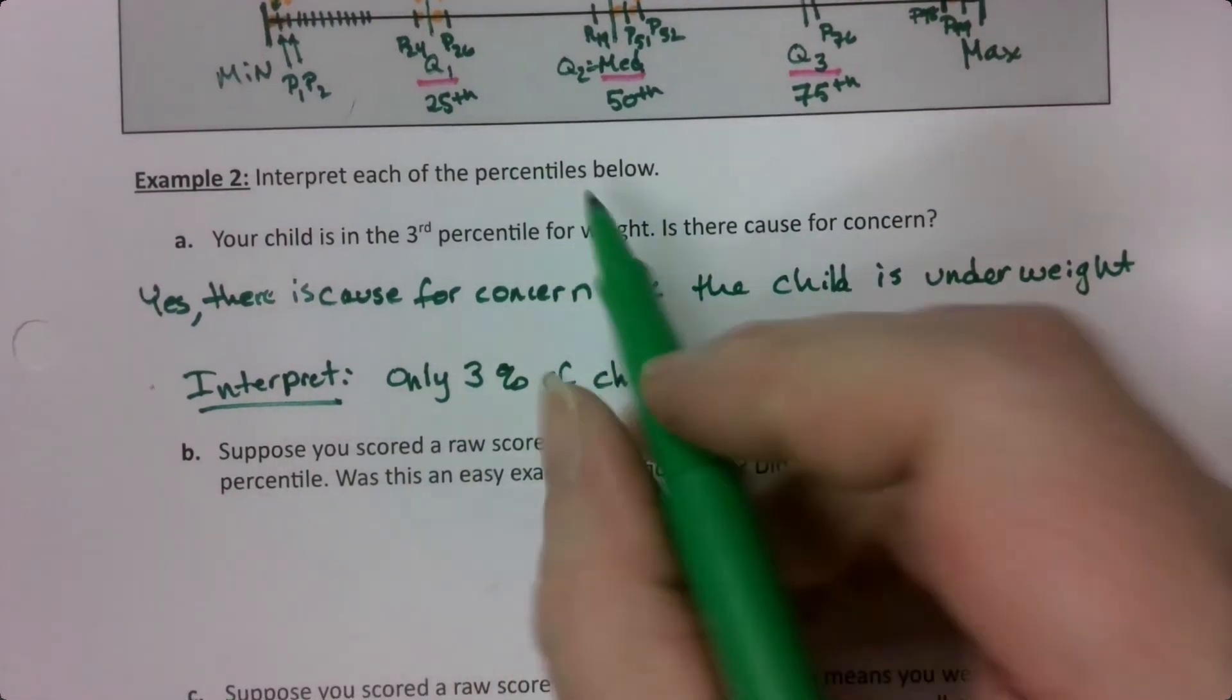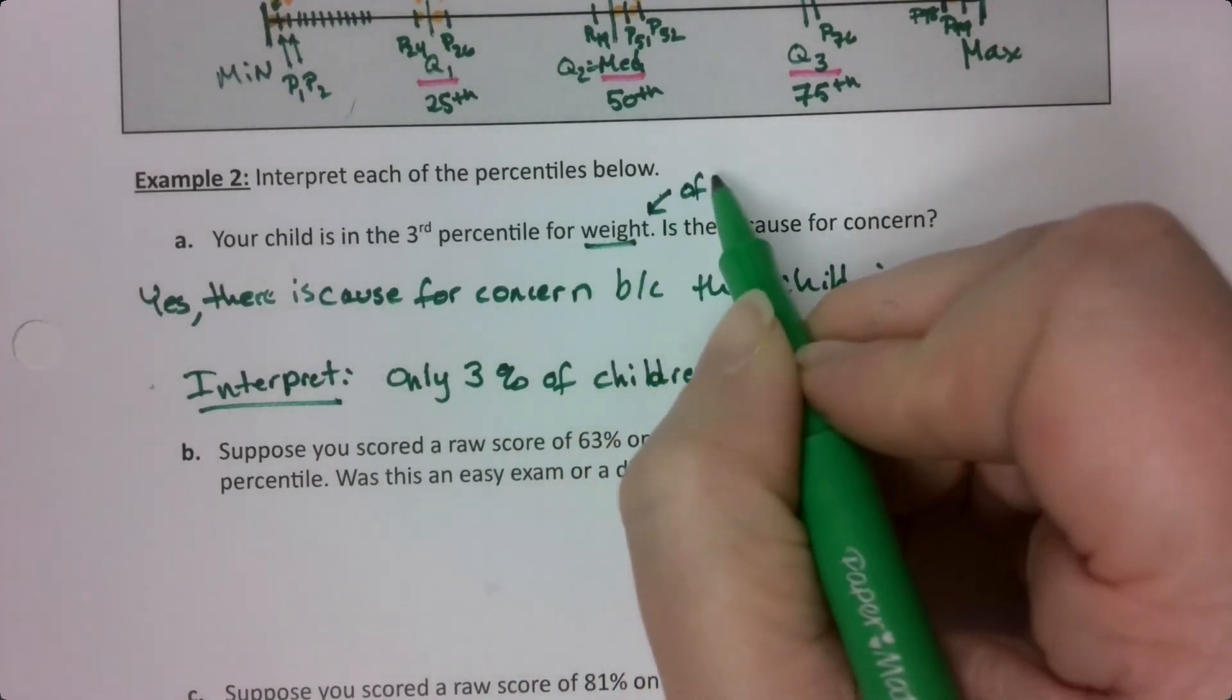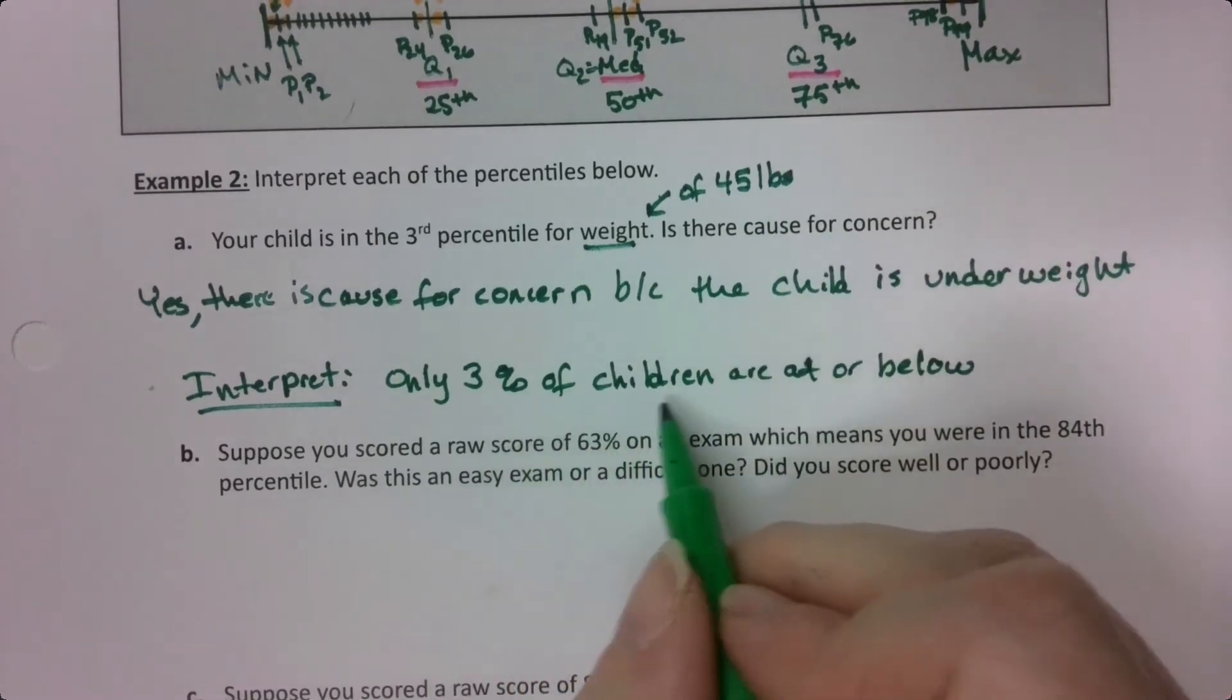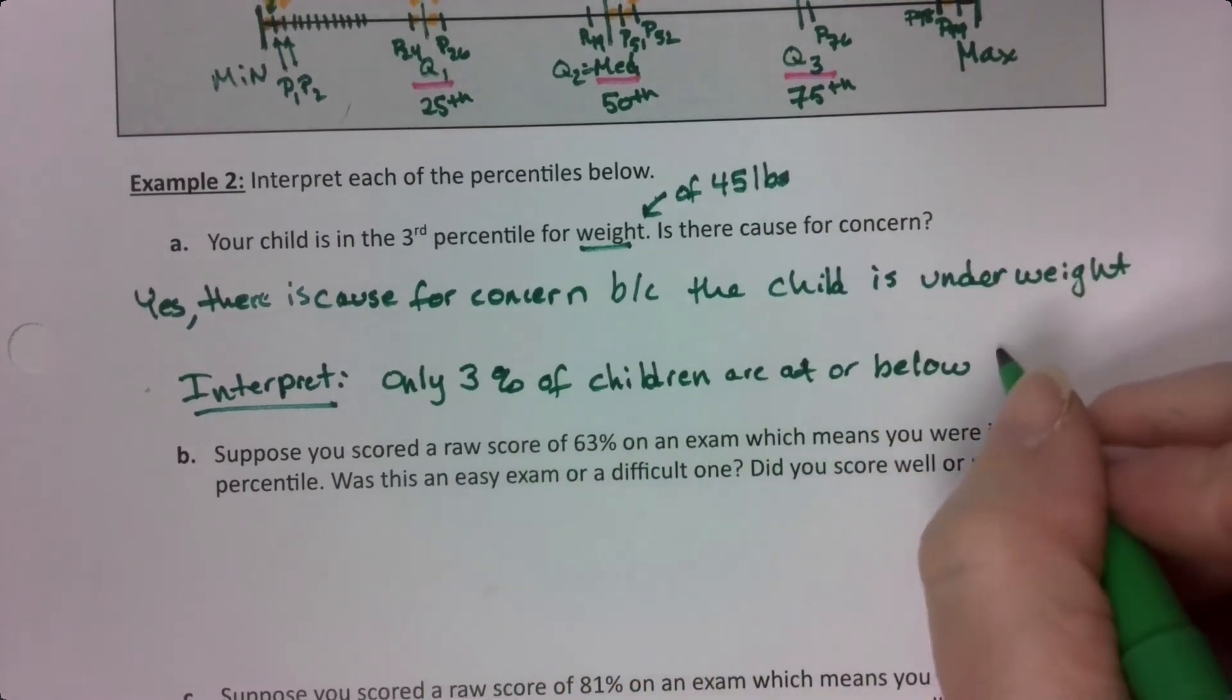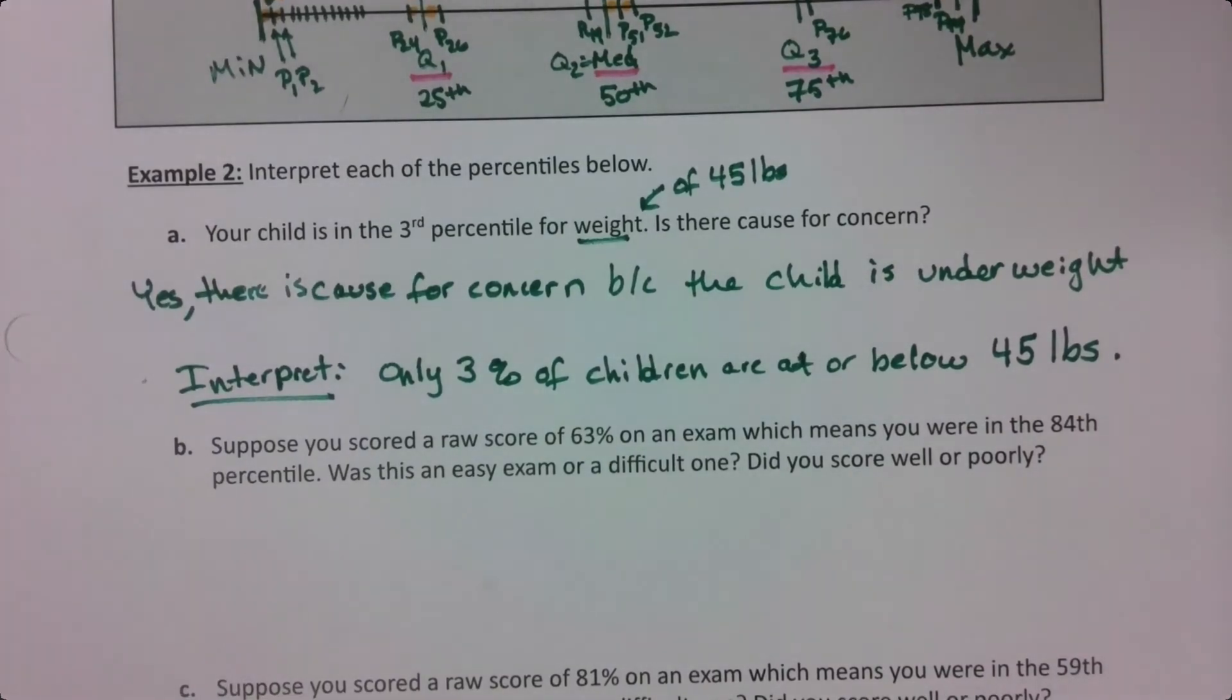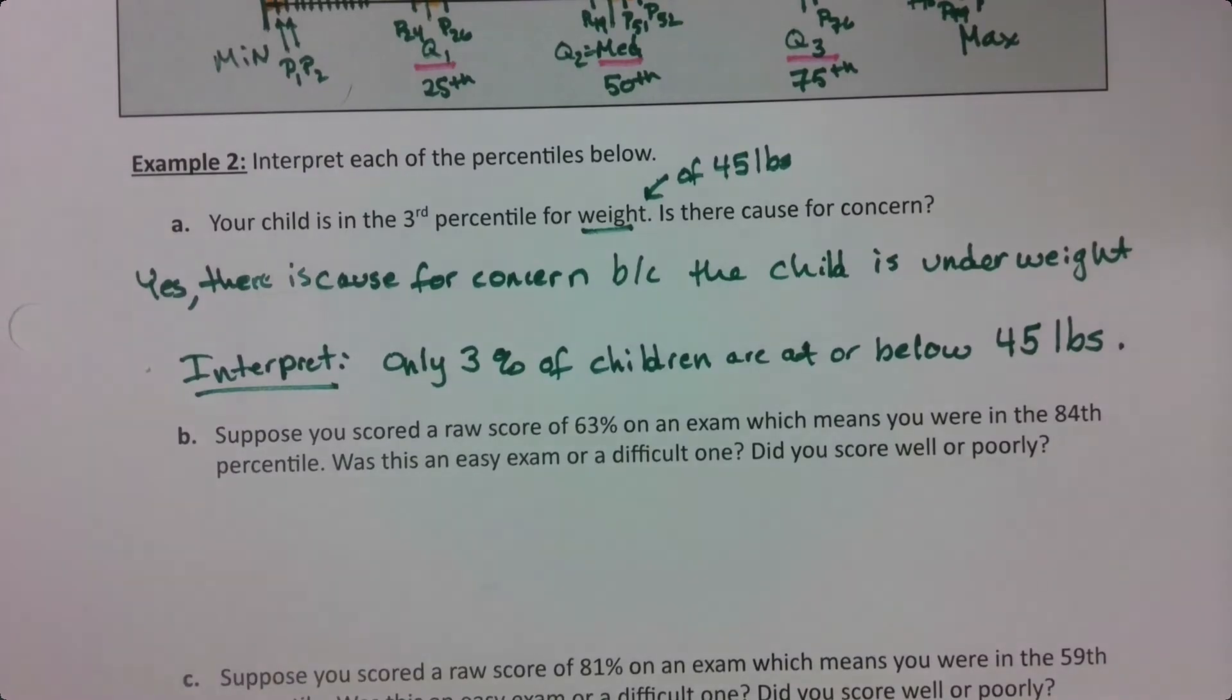Let me just pretend. I'm just going to give this child a weight. Let me say it's 45 pounds. So you'd say only 3% of children are at or below 45 pounds. Something like that.